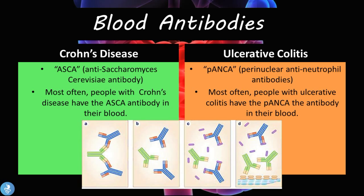Regarding blood antibodies: in Crohn's disease we have ASCA — the anti-Saccharomyces cerevisiae antibody — and most often people with Crohn's disease have this ASCA antibody positive in their blood. In ulcerative colitis we can have P-ANCA — the perinuclear antineutrophil antibody — and most often people with ulcerative colitis have the P-ANCA antibody present in their blood.